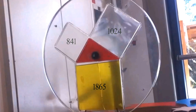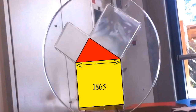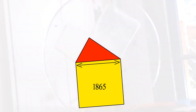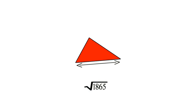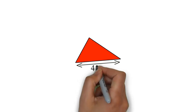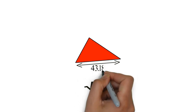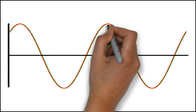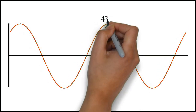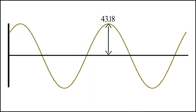Now, how do we find the length of the hypotenuse from the area? Simple — we just take the square root of 1865, which gives us 43.18. This is equal to the amplitude of my phase-shifted wave.